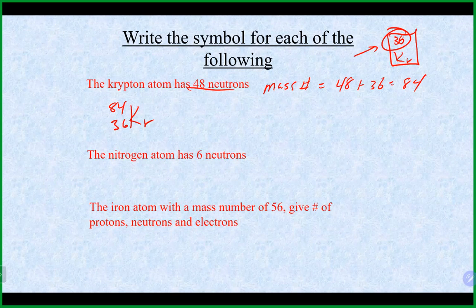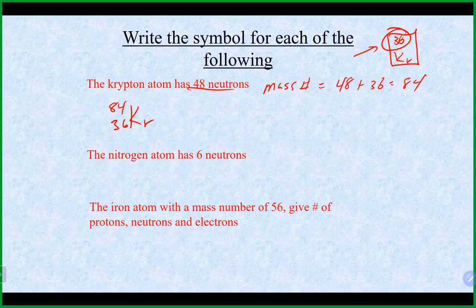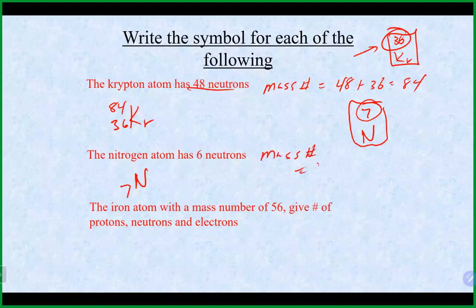For nitrogen with 6 neutrons: the symbol is N, the atomic number from the periodic table is 7, which goes bottom left and also gives us the number of protons. Mass number = 7 plus 6 = 13. The symbol is N with 13 on top and 7 on the bottom. Important: do not use the number from the bottom of the periodic table — for nitrogen it's 14.01, and rounding to 14 would be wrong.